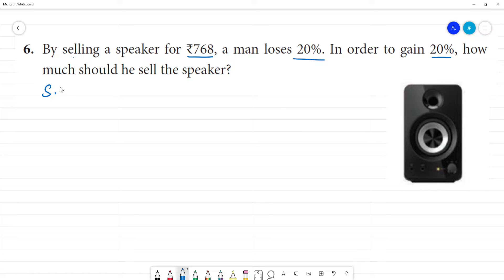What do we need to see? First, selling price is Rs. 768. What do we need to see? Loss is 20%. So, what do we need to calculate?